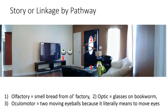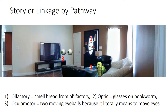Story or linkage by pathway: number one, olfactory, is linked at the door — associating with the smell of bread from 'olfactory.' Number two would be the coffee table, which is optic; at the coffee table, you see glasses on a bookworm. Number three, next to the TV, is ocular motor — you see two moving eyeballs because it literally means to move eyes.